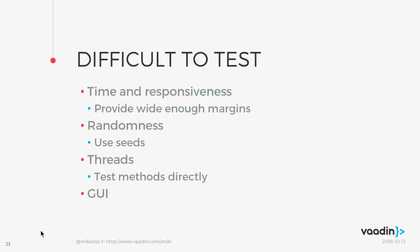There are a few things that are difficult to test — corresponding to what I said at the very first lecture. Time and responsiveness are really hard to test — you can't guarantee timing, so provide wide enough margins. If you expect something to happen within a second, test if it happens within five seconds, and even then it might fail. Random things are also hard to test, but you can use random seeds to guarantee the same sequence every time. Threads are also difficult — you might be better testing those methods directly rather than testing threads simultaneously.